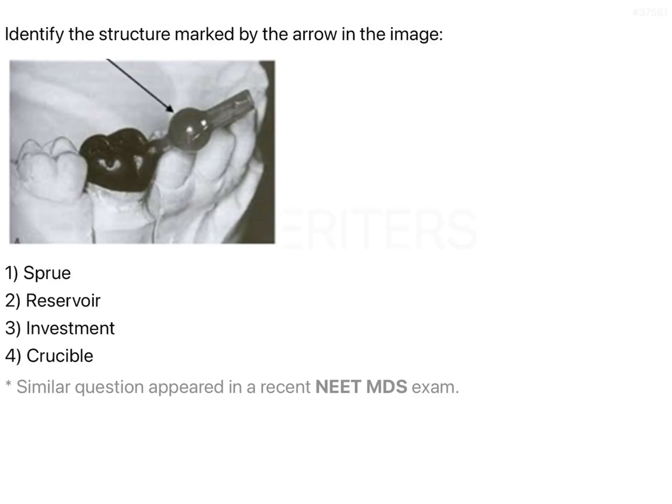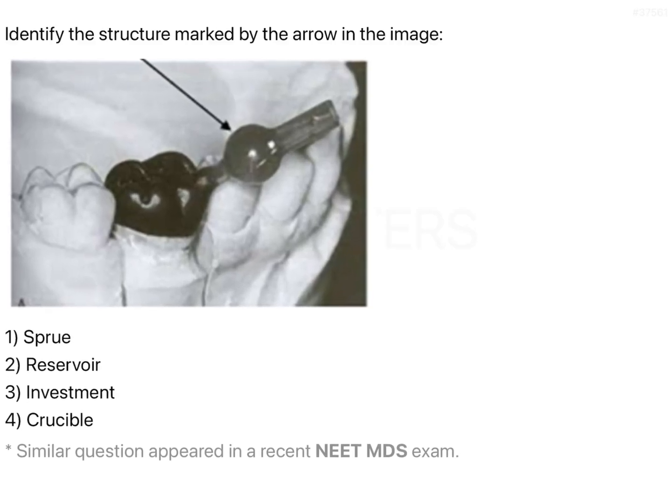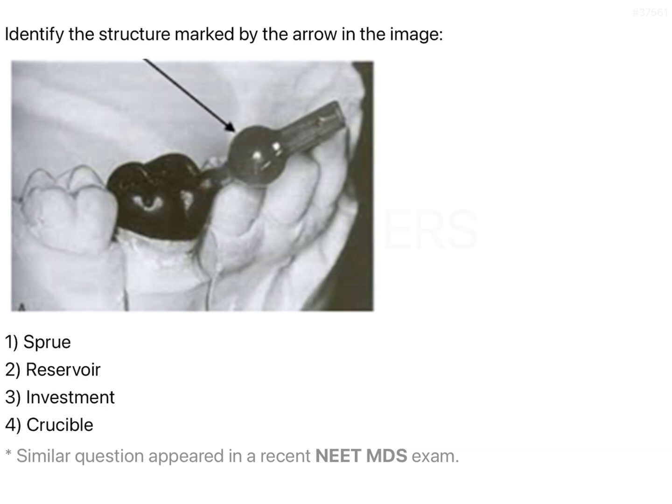The question asks to identify the structure marked by the arrow in the given image. The arrow is pointing towards a globular structure. You can notice that it is basically a cast or die, and on the die there is a wax pattern of a crown that has been formed. To this wax pattern of the crown, a screw attachment has been fixed onto the thickest portion of the wax pattern.